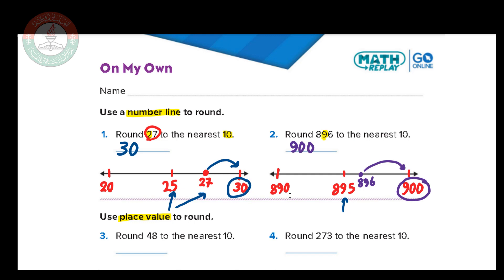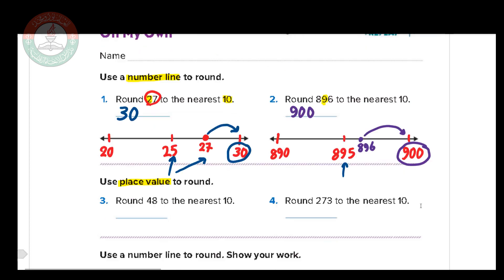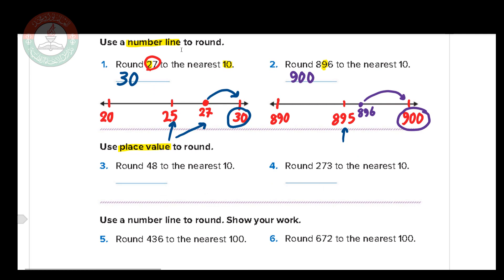...899, or even 900 — we round all of these to 900. And if the number is exactly in the middle, we round up to the bigger number. So if it's exactly 25, we round to 30; if it's exactly 895, we round to 900. That's the first method using the number line.